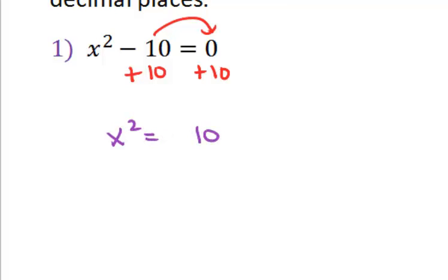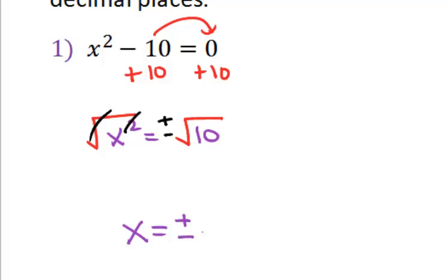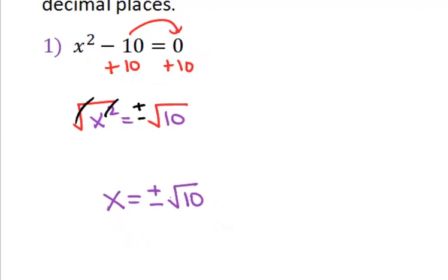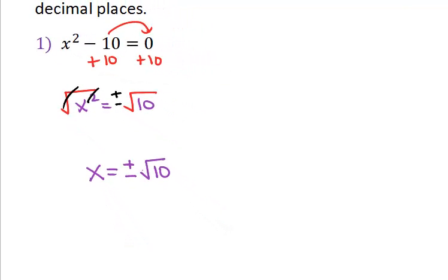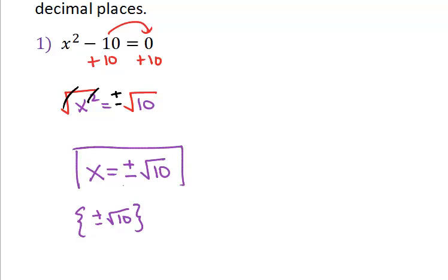To get rid of my square, I force in a square root — and do not forget that also forces in a plus or minus. On the left, my square and square root cancel out, and I am left with x equals both positive and negative root 10. If it wants it in solution set format, use braces around the same answer. So this would be our exact answer.